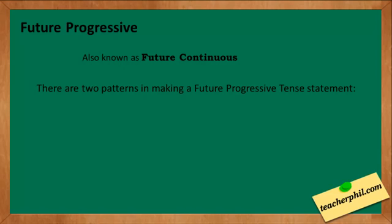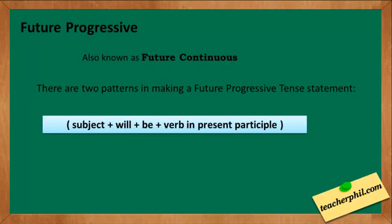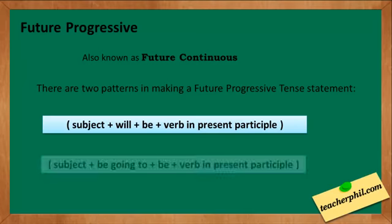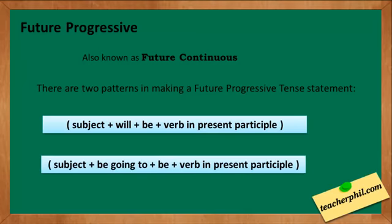The future progressive tense is also known as the future continuous tense. There are two patterns for making a future progressive statement: through the 'will' form and the 'be going to' form. The pattern for 'will' is: subject + will + be + verb in present participle. For 'be going to': subject + be going to + be + verb in present participle.